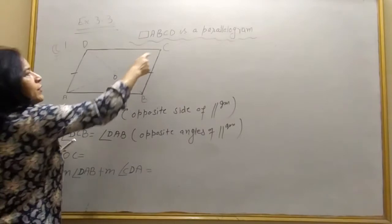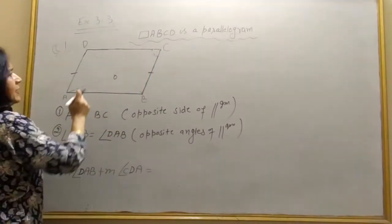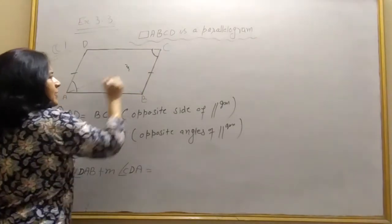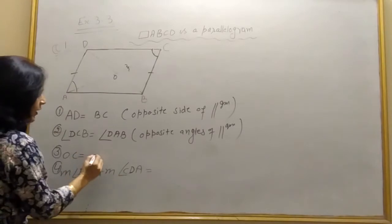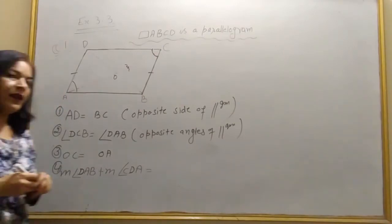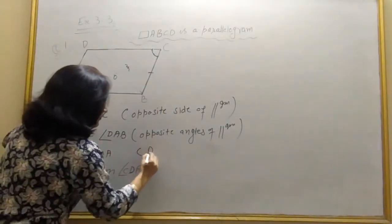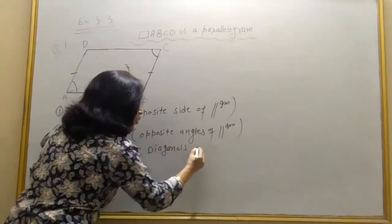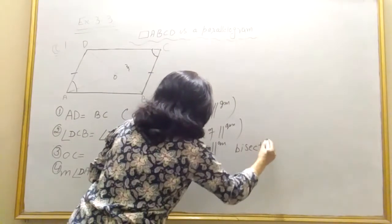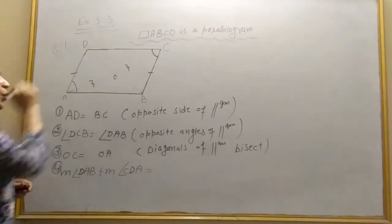Third: OC will be equal to OA. Line segment OC will be equal to line segment OA, because diagonals of a parallelogram bisect each other — meaning the diagonals divide each other into two equal parts. So OC will be equal to OA.